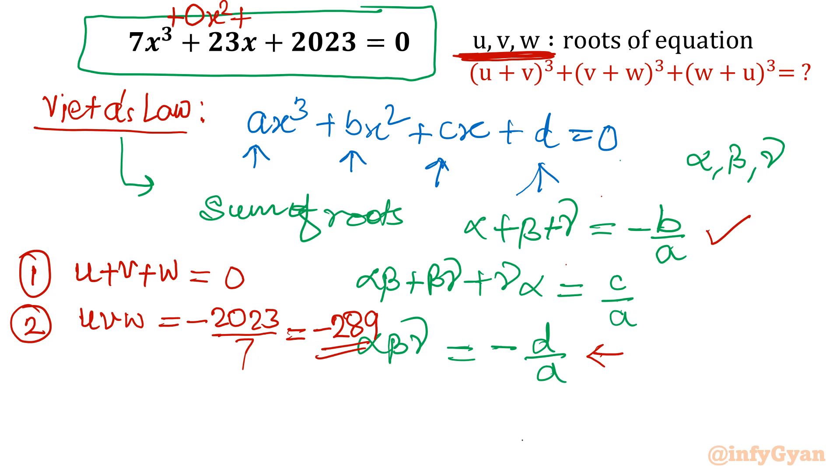Now come to our expression. This we have to find out. So our first equation, see this equation only. If u + v + w = 0, that means from this equation we can write: u + v = -w, v + w = -u, and u + w = -v.